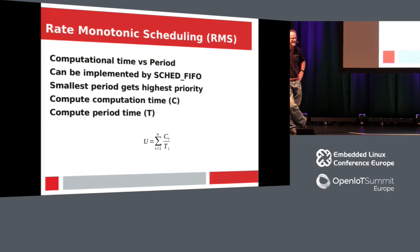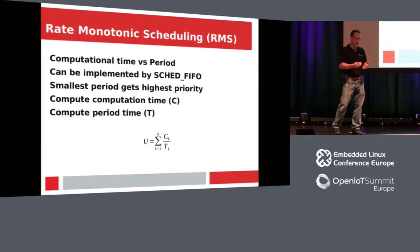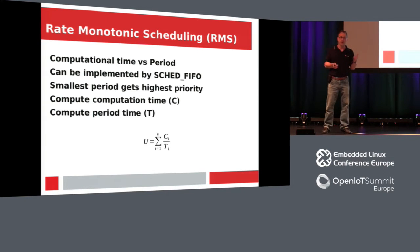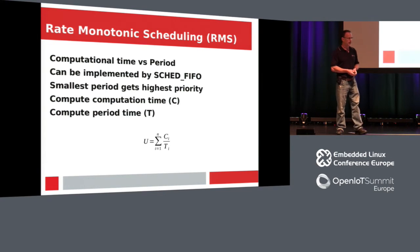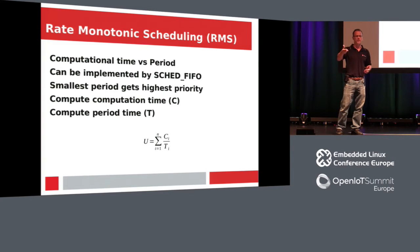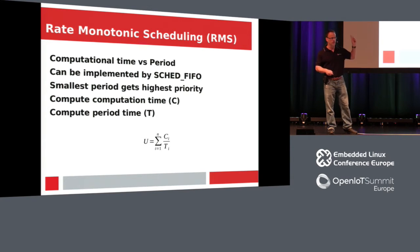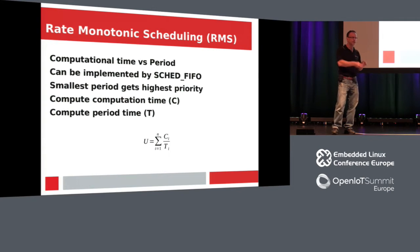In RMS, you have computational time versus period. Computational time is how much execution time you need for the process. It can be implemented with SCHED_FIFO. The smallest period gets the highest priority. The sum of all utilizations — each task's computational time over its period — gives you total CPU utilization.